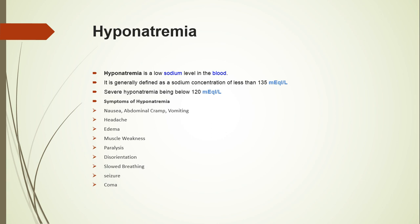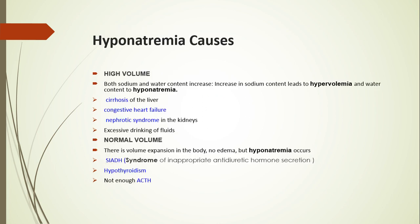Hyponatremia is called low sodium level in the blood. In severe hyponatremia there is less than 120 milliequivalents per liter of sodium present. Symptoms of hyponatremia include nausea, abdominal cramps, headache, anemia, muscle weakness, paralysis, disorientation, slowed breathing, seizure, and coma.